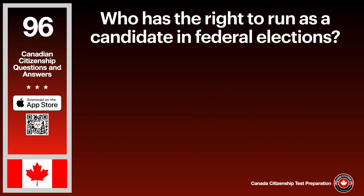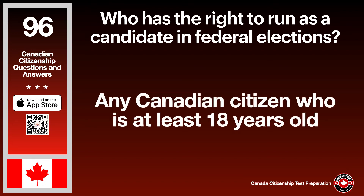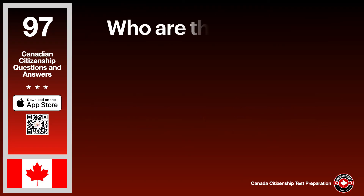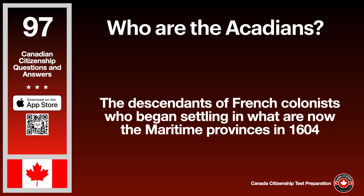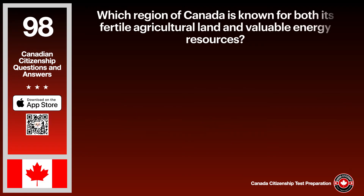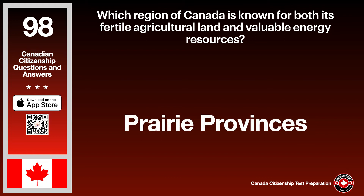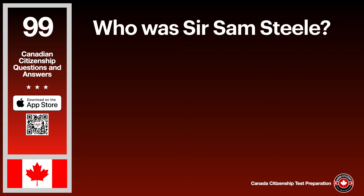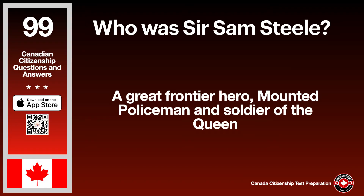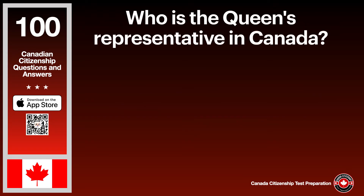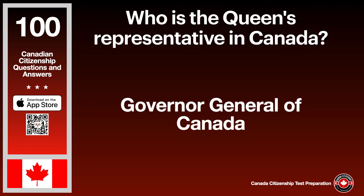Who has the right to run as a candidate in federal elections? The answer is any Canadian citizen who is at least 18 years old. Who are the Acadians? The answer is the descendants of French colonists who began settling in what are now the Maritime Provinces in 1604. Which region of Canada is known for both its fertile agricultural land and valuable energy resources? The answer is the prairie provinces. Who is Sir Sam Steele? The answer is a great frontier hero, mounted policeman, and soldier of the Queen. Who is the Queen's representative in Canada? The answer is the Governor General of Canada.